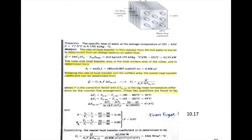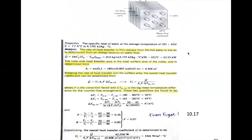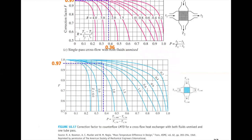We need to calculate P and Z (called R in some textbooks) to read the correction factor from figure 10-17 — the correction factor for a cross-flow heat exchanger with both fluids unmixed and one tube pass. Both fluids are unmixed because we have fins; the fins direct the fluids and prevent mixing. P is (T_tube,out minus T_tube,in) divided by (T_shell,in minus T_tube,in), giving 0.36. Z is (T_shell,in minus T_shell,out) divided by (T_tube,out minus T_tube,in), giving 0.8.